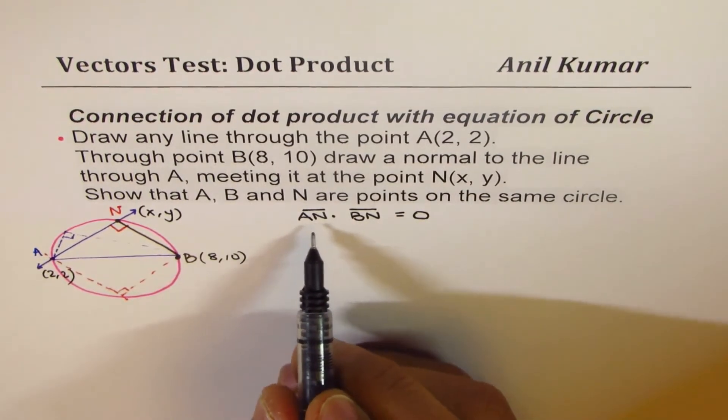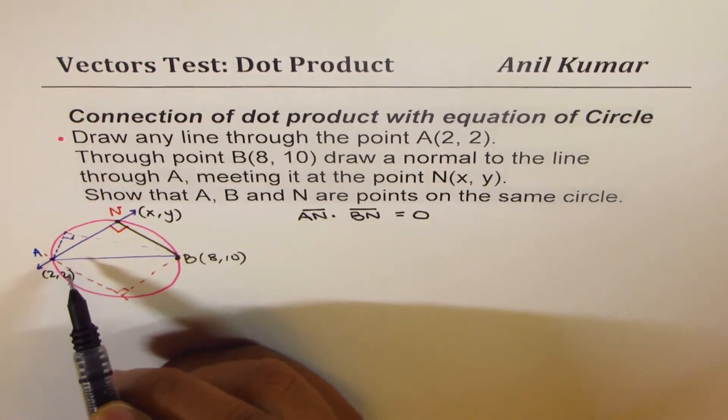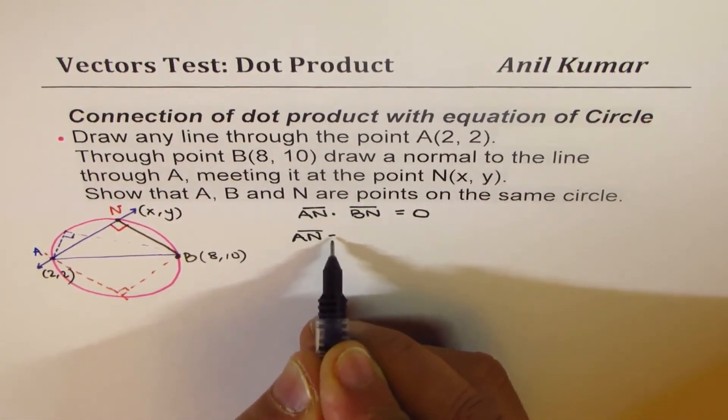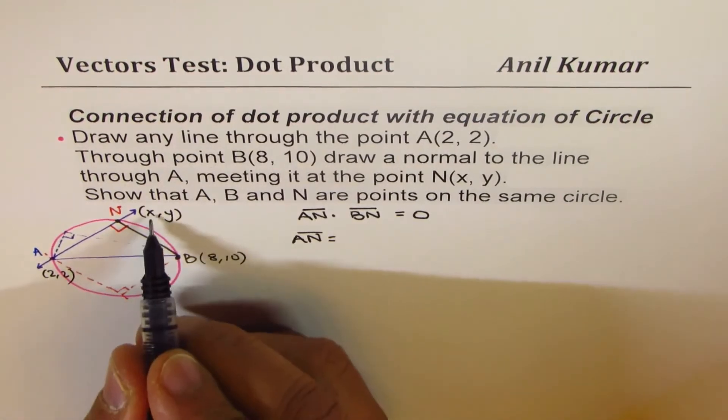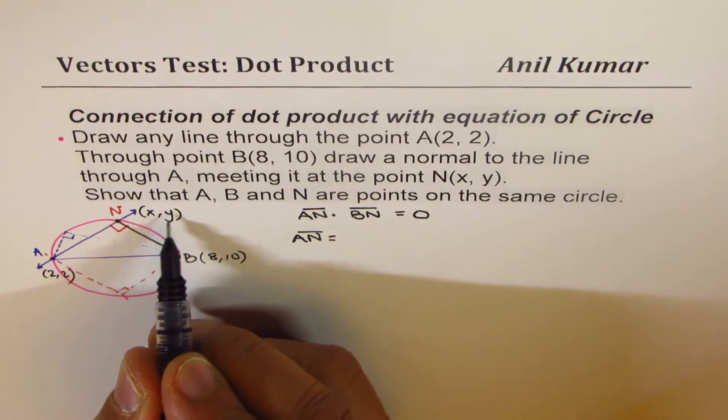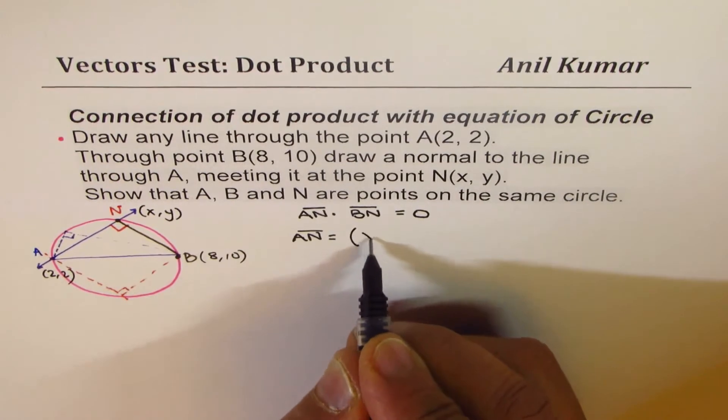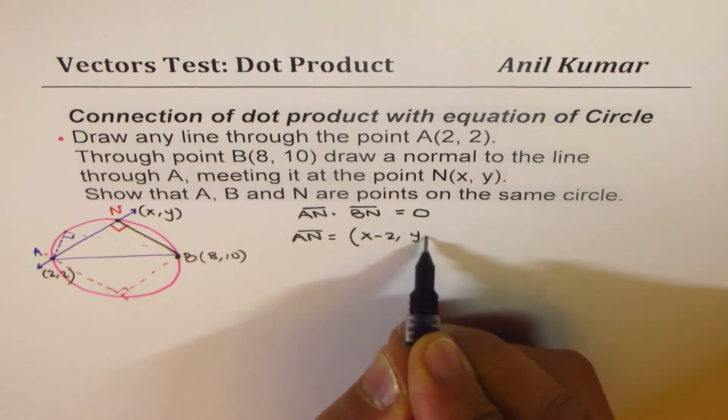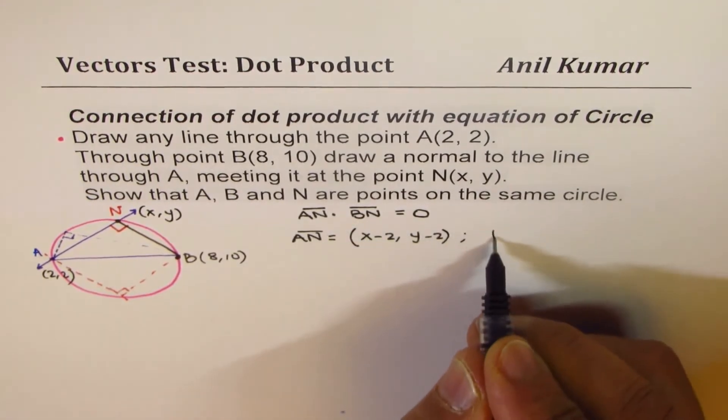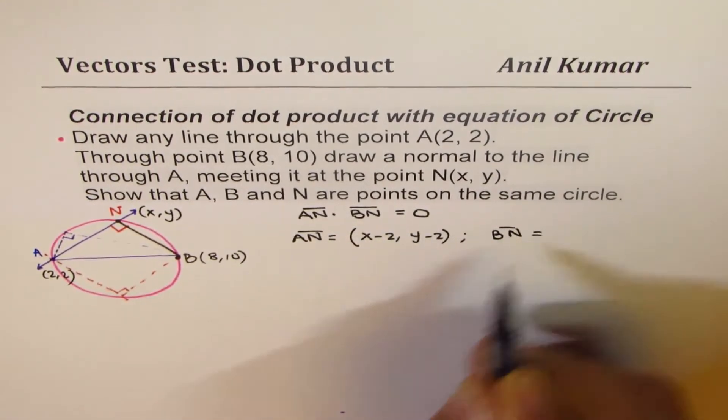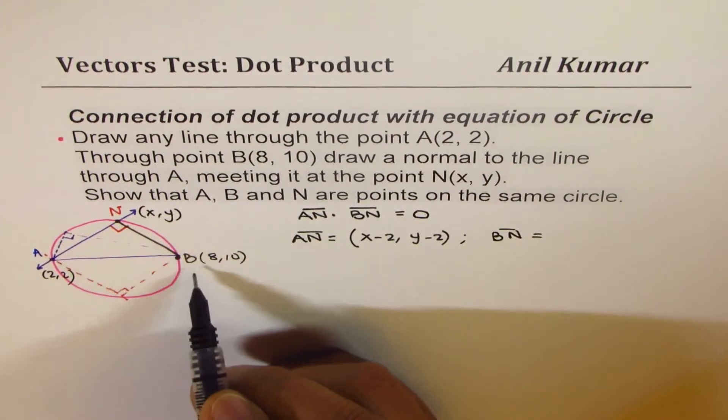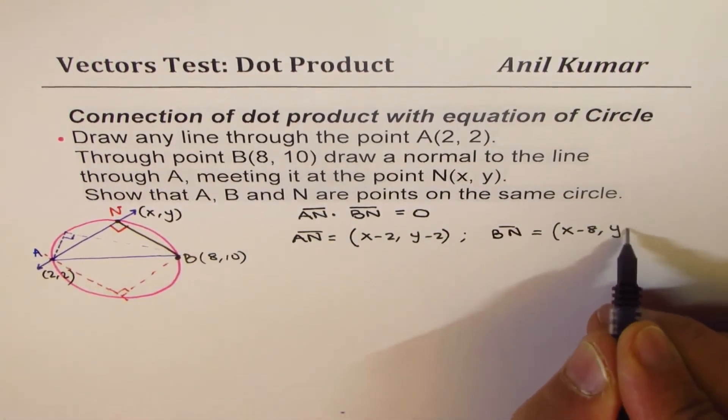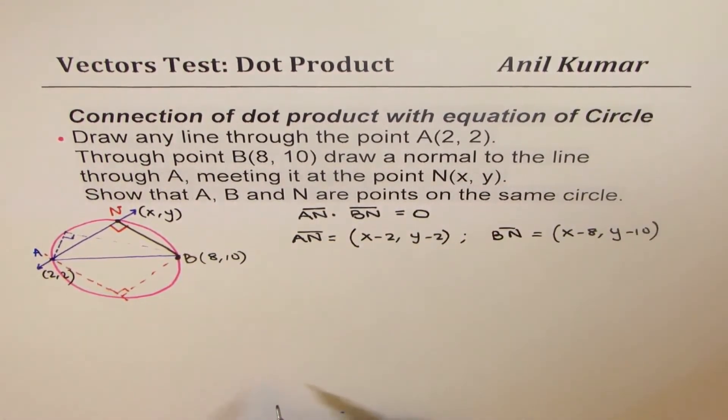Now, what is AN? Let's write down. AN is equal to, because this point is X, Y, therefore AN will be - A is 2, 2 - so X minus 2, Y minus 2. And what is BN? B to N is X minus 8, Y minus 10. Perfect. So that is what AN and BN are.